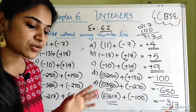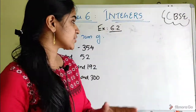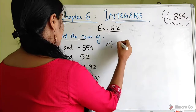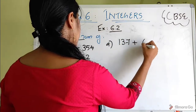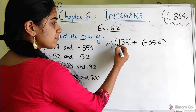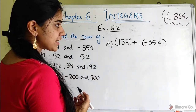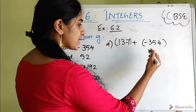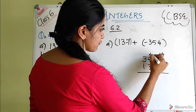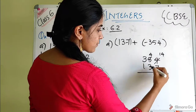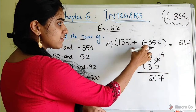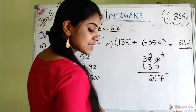Question number 4: find the sum. First question is 137 plus minus 354. One positive number and one negative number — different signs, so we take the difference. 14 minus 7 is 7, 4 minus 3 is 1, 3 minus 1 is 2, giving 217. Wait — the answer is 270. The bigger number is 354, which is negative, so the answer is minus 270.